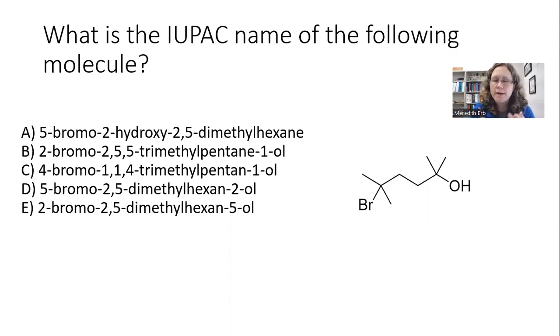We have two functional groups. We have a bromo group, which we know is very low on the totem pole for priorities. And then we have an alcohol group. So the first thing you need to do is figure out which of the two groups is going to have priority.